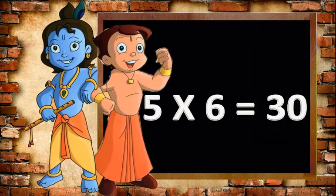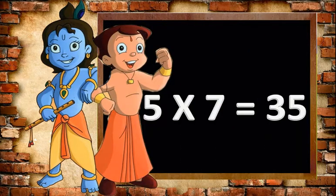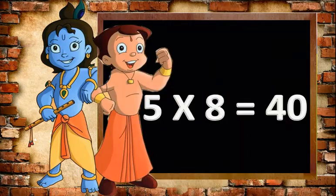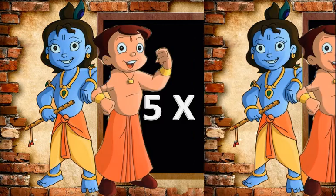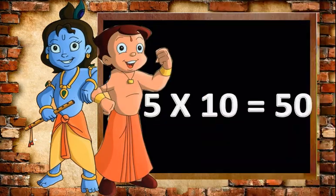5 sixes are 30. 5 sevens are 35. 5 eights are 40. 5 nines are 45. 5 tens are 50.